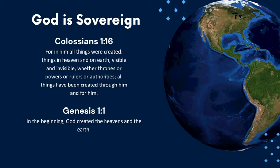Colossians 1:16 says, 'For in him all things were created, things in heaven and on earth, visible and invisible, whether thrones or powers or rulers or authorities, all things have been created through him and for him.' Genesis 1:1 says, 'In the beginning, God created the heavens and the earth.' In our sinful natures, we are rebellious to God. Even though he is the creator of the universe, we rebel against him by being our own gods and creating our own rules.